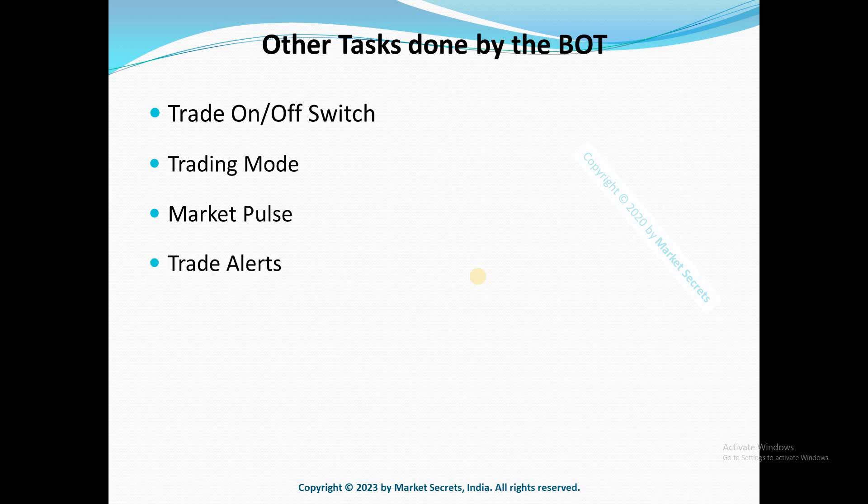The next option is trading alerts. The bot will automatically provide alerts when a trade is triggered, when an exit is triggered for any leg, when the trailing stop loss moves for any leg, and when a forced square off happens. It also shares an end-of-day profit or loss report summary automatically.